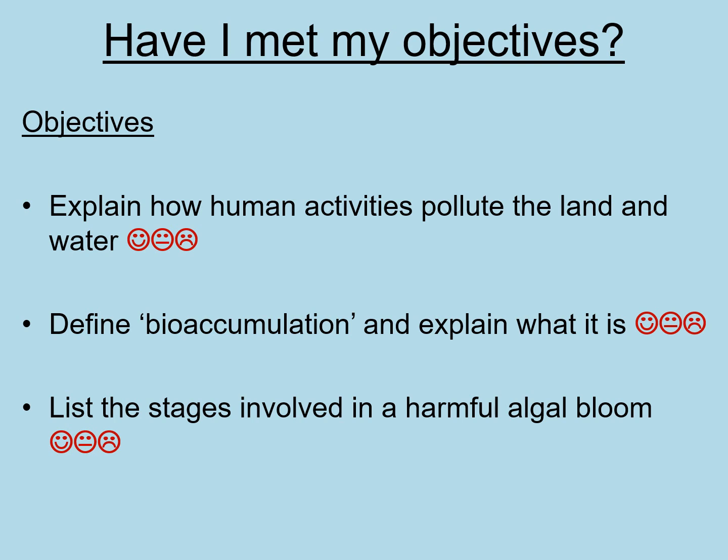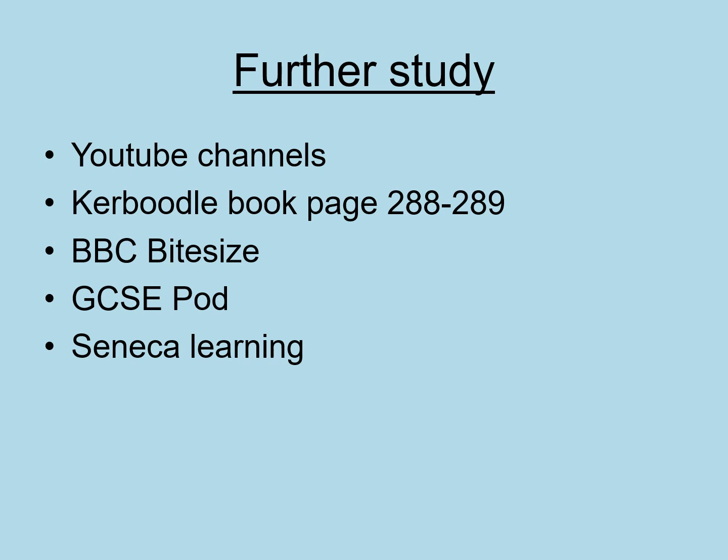Finally, assess yourself against the objectives. Look back at where you've written your objectives and draw a smiley, middle, or sad face for your confidence level. Can you explain how human activities pollute the land and water? Can you define bioaccumulation and explain what it is? Can you list the stages involved in a harmful algal bloom? For any you're under-confident with, you can do further study on YouTube channels such as Cognito, Primrose Kitten, Free Science Lessons, and the Amoeba Sisters, or look at pages 288 and 289 of the AQA Biology book on Caboodle, or use BBC Bitesize, GCSE Pod, and Seneca Learning. Thanks for your hard work today and I'll see you next lesson.